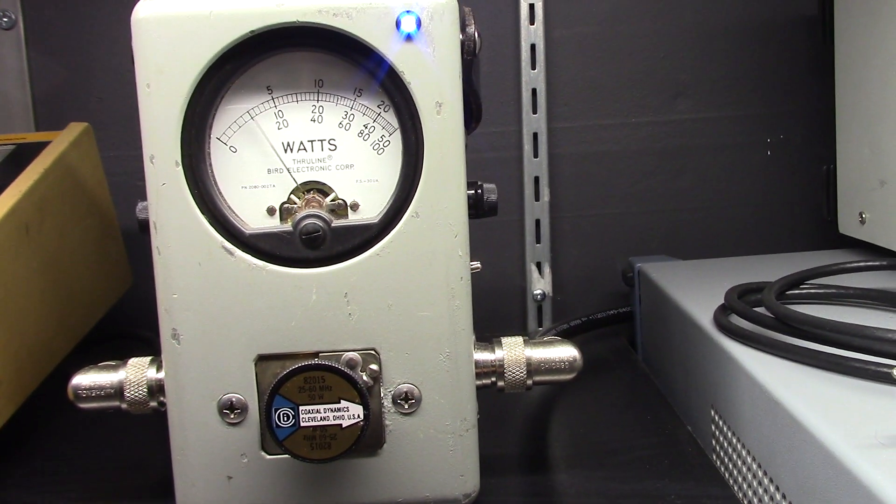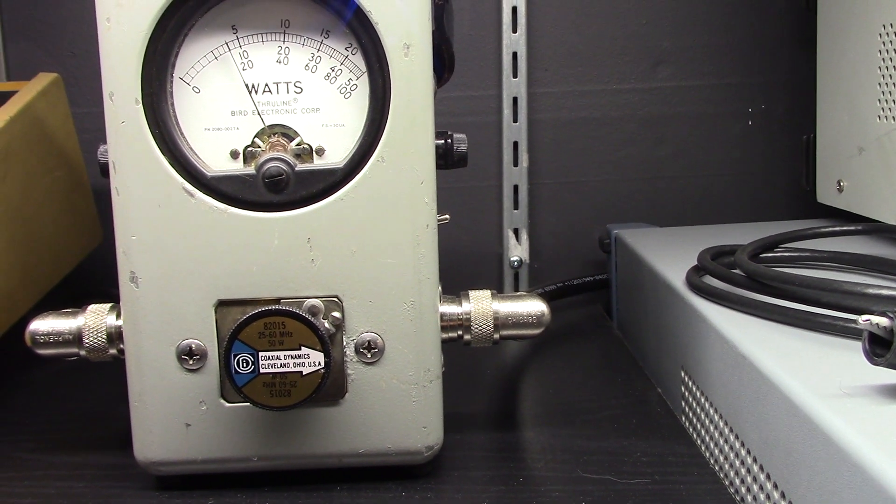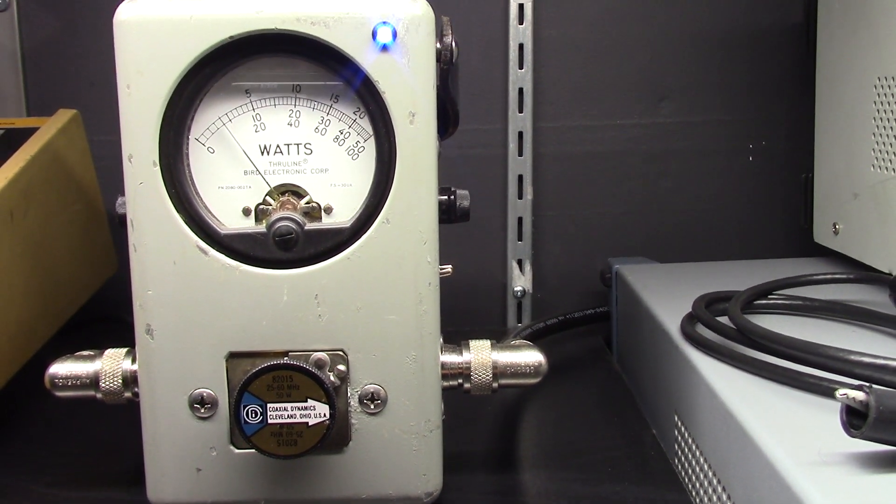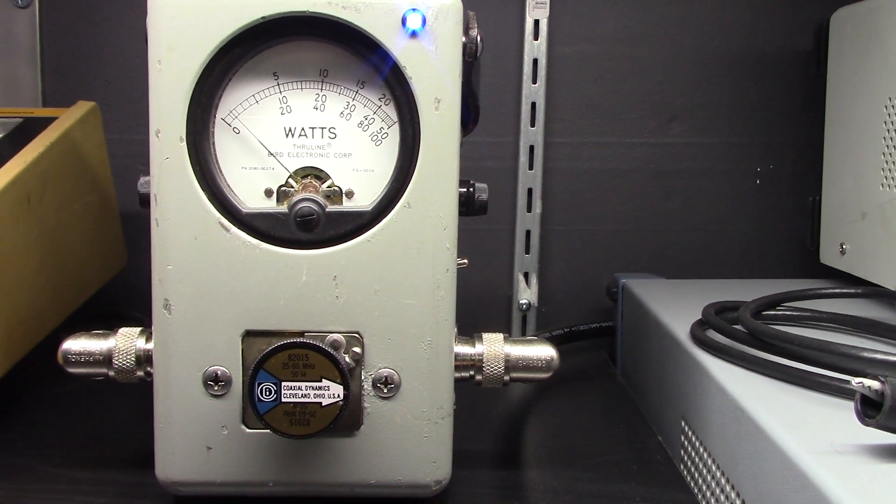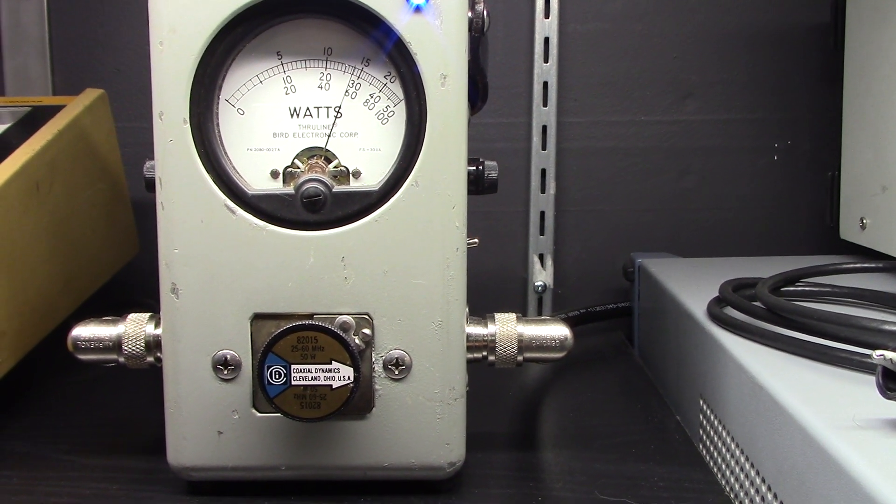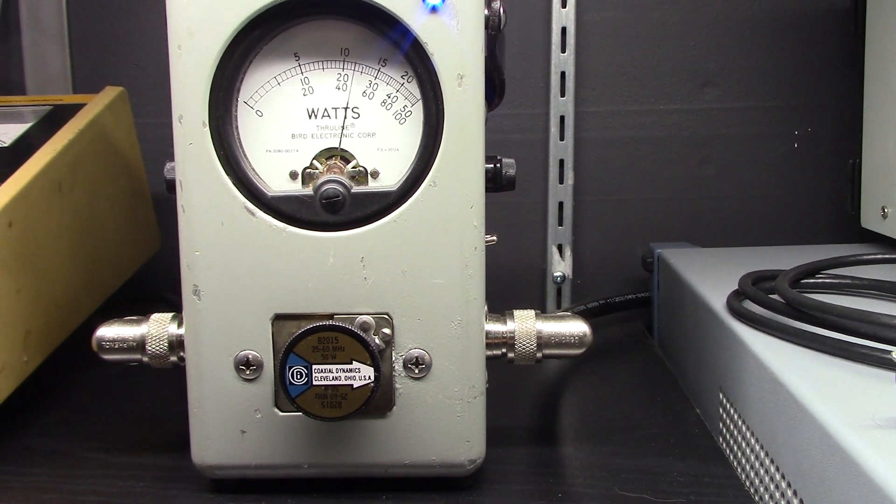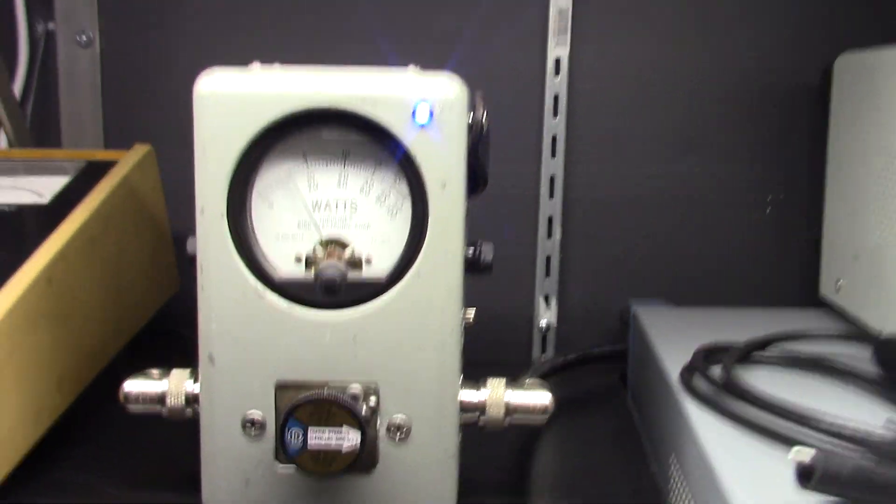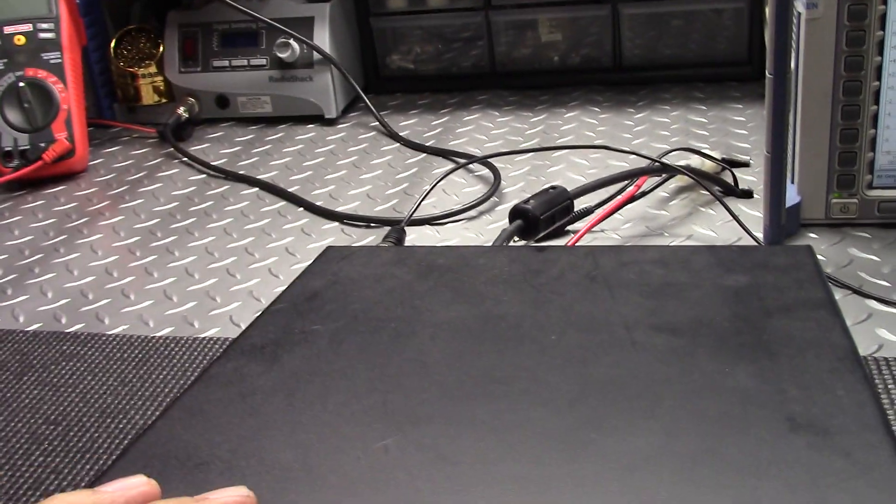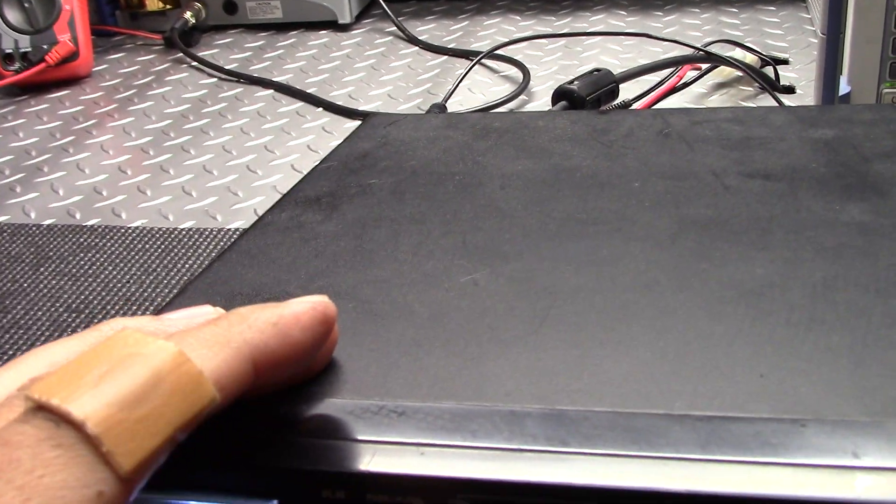AM. Mic gains all the way, yep. About an 8-watt carrier, maybe a hair under. And we'll modulate: 1, 2, 3, 4, 5, 5, 5, 4, 4, 5. Just under 30 or so. Okay. So that's that, did the power checks.